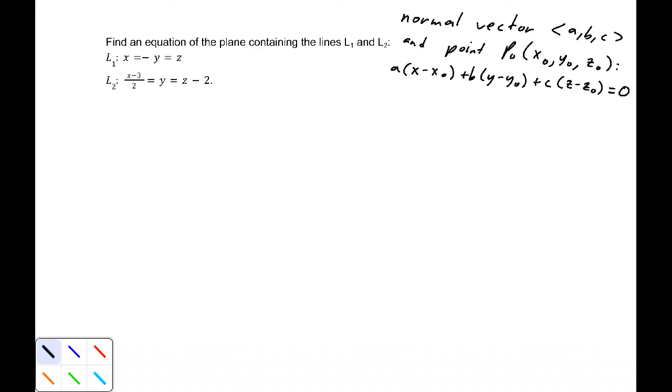If we have a normal vector given by (a, b, c) and a point P₀ that is (x₀, y₀, z₀), then we can write the equation of that plane. Two things that we need: a normal vector and a point. It needs to be a point on the plane given by these two lines, so any point on either one of those lines will work.